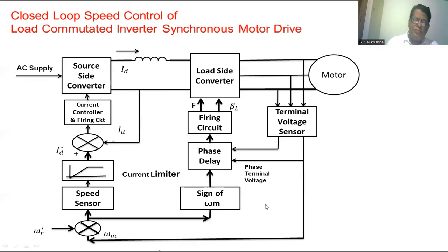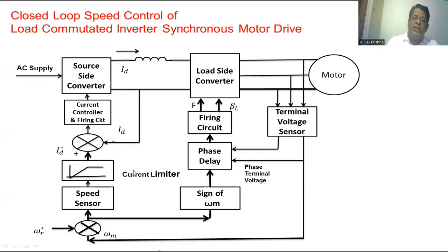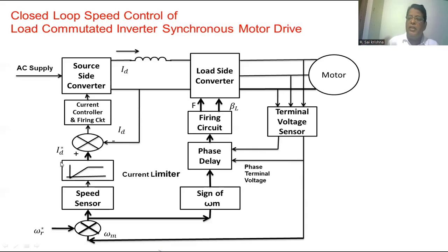If we increase the reference speed, the actual speed is less than the reference speed and the speed error is positive. Based on the sign of the speed error, the commutation advance angle will be set for motoring operation. Since the speed error is positive, the commutation advance angle becomes positive and the load side converter operates accordingly. For the source side converter, the current limiter limits the DC link current to the maximum value because the speed error is positive. This means maximum torque is developed in the motor, so the motor speed accelerates quickly and reaches the desired value. Once it reaches the desired value, the current limiter action reduces and the DC link current decreases, settling to a value where the developed torque equals the load torque.